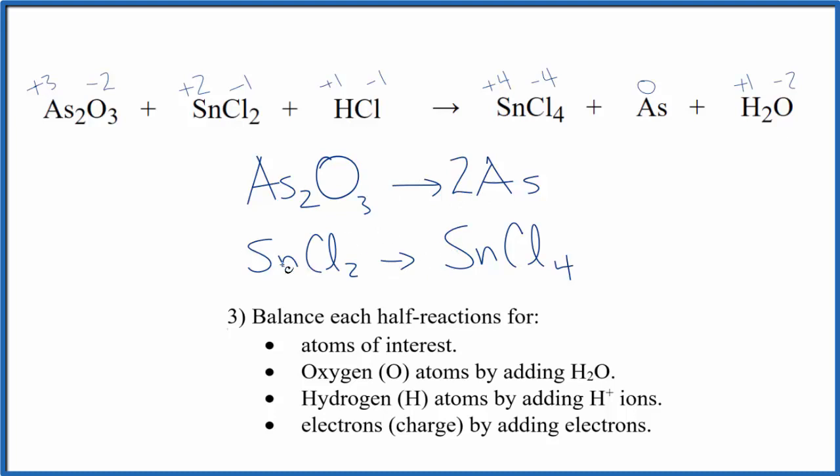Down here, we could try to balance the tin and the chlorine by putting a two here. That would balance the chlorines, but now we have two tins, so we need to put a two here. And we get caught in a loop. The solution is that we have hydrochloric acid here in the reaction. So we should put hydrochloric acid here, since these are the reactants, this is all happening at the same time here.